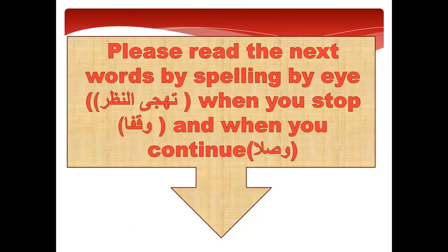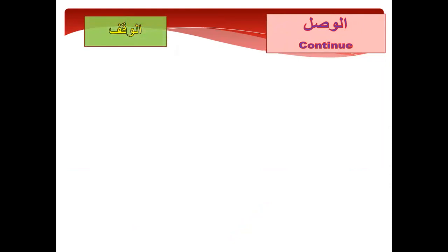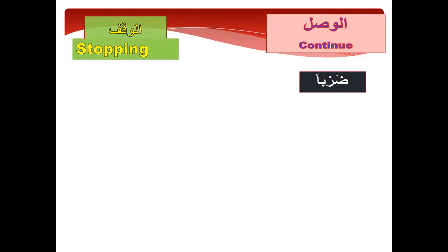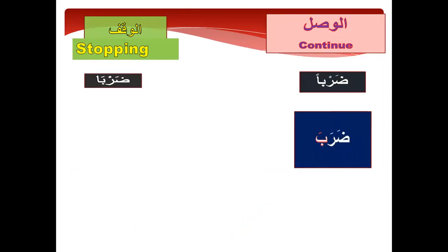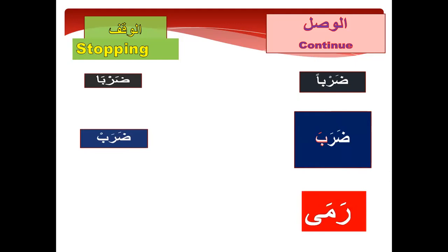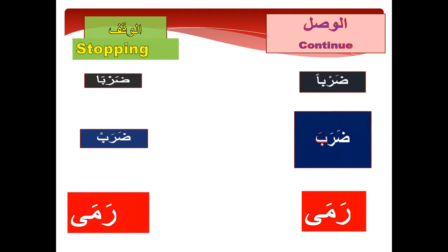Please read the next word by spelling by eye — Tahajji Al-Nazar — when you stop and when you continue: waslan wa waqfan. When you continue: Durban — ended by tanwin. When you stop: who can tell me what it will be? Yes — Darab. When you continue it will be Darabah; when you stop, Darab. When you continue it will be Ramah; when you stop, Ram.